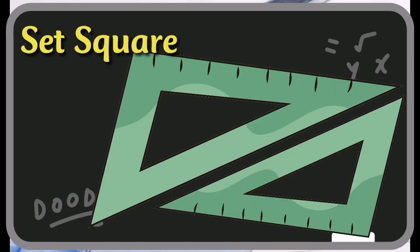Set squares are two triangular patterns made of plastic that are used to make accurate angles and parallel or perpendicular lines. A pair of set squares is 30 degrees, 60 degrees and 45 degrees. These patterns are made to draw lines at 30 degrees, 60 degrees and 45 degrees.